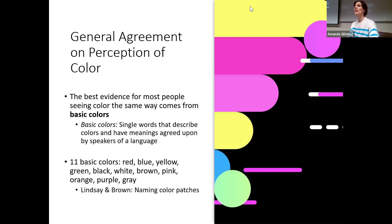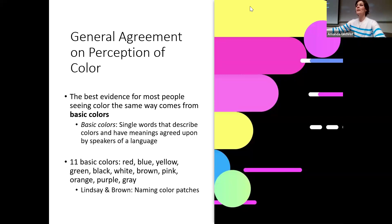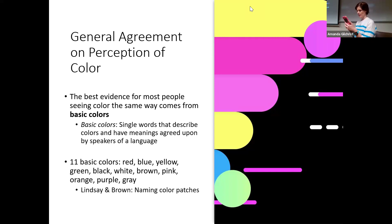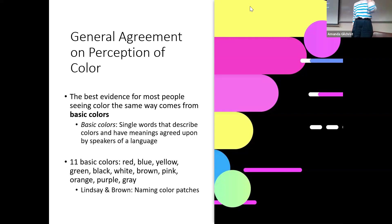It gets more complicated with foreign languages — for example, yellow has two syllables in English, but amarillo in Spanish has four. Yellow in French is 'jaune' — pretty short — and in German it's 'gelb.' So for the most part, basic colors across languages have really short names. People named different color patches, and the data show agreement on those 11 basic colors.